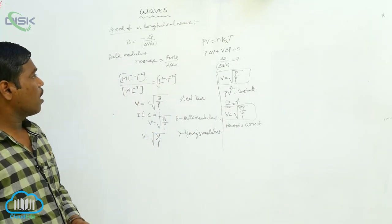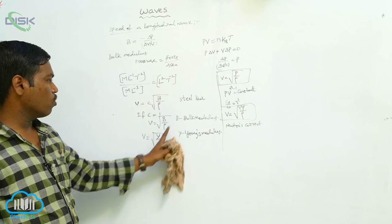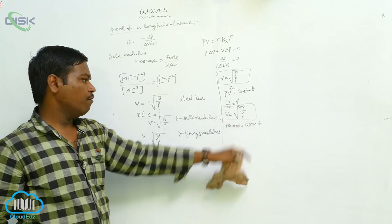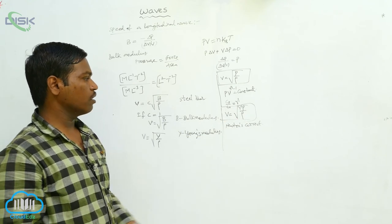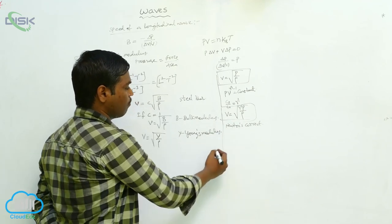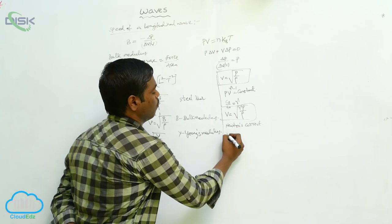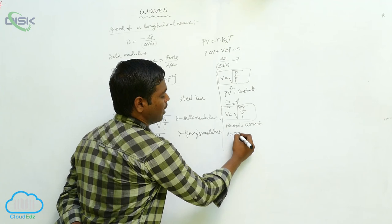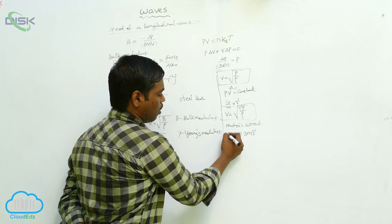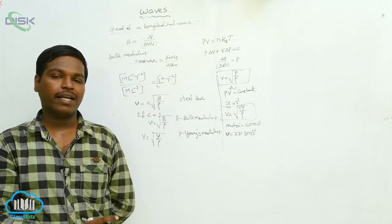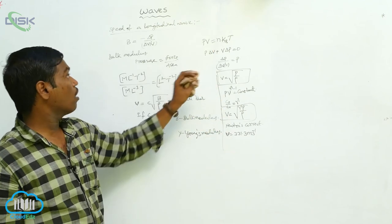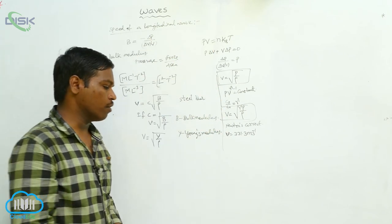So the speed of a longitudinal wave is v equals square root of P by rho, corrected to v equals square root of gamma P by rho. Substituting values, we get the speed of sound as approximately 331.3 meters per second, which is nearly equal to the practical value.